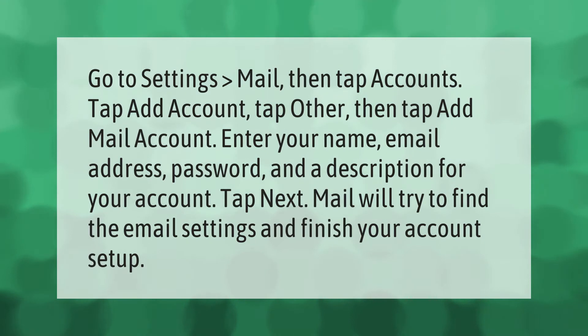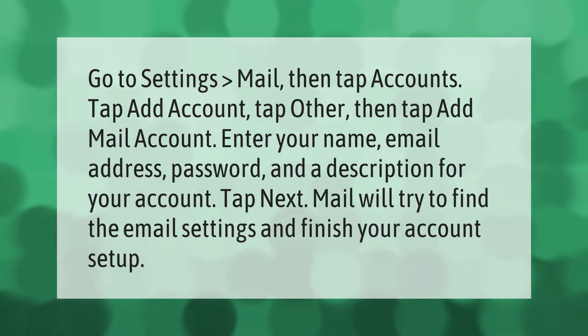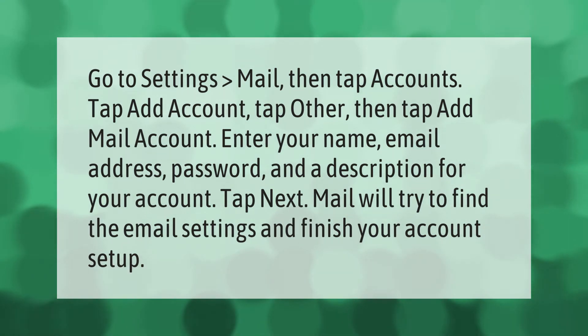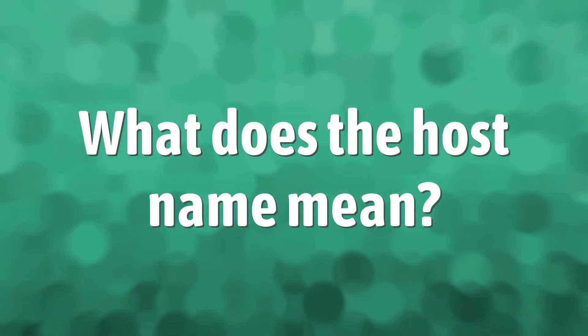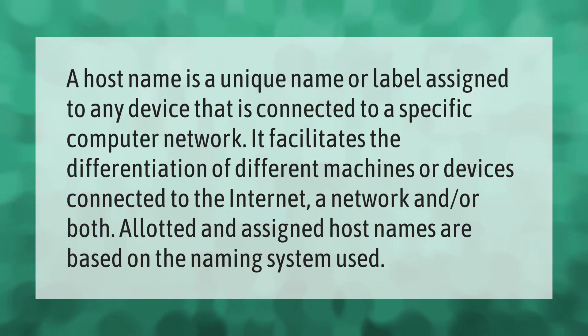Go to Settings > Mail, then tap Accounts. Tap 'Add Account,' tap 'Other,' then tap 'Add Mail Account.' Enter your name, email address, password, and a description for your account, then tap Next. Mail will try to find the email settings and finish your account setup.